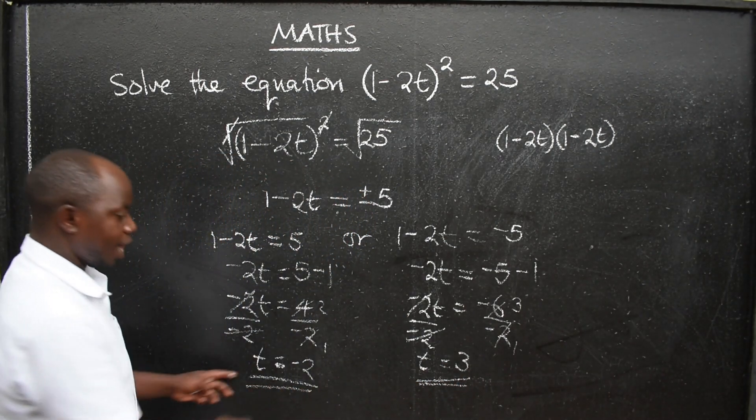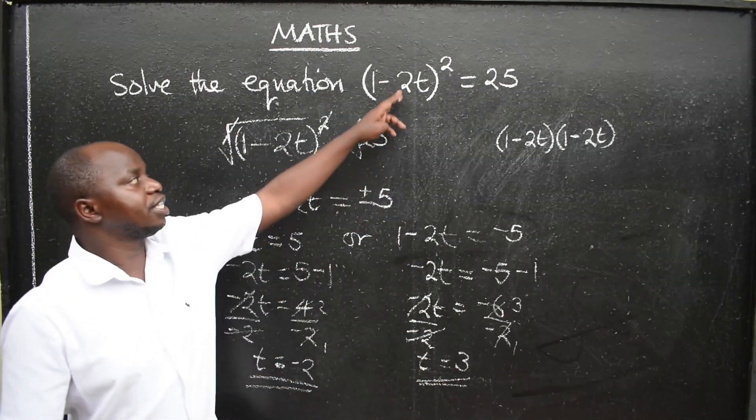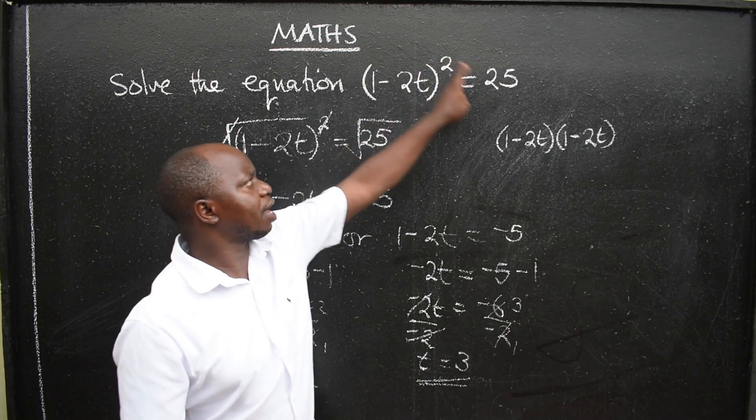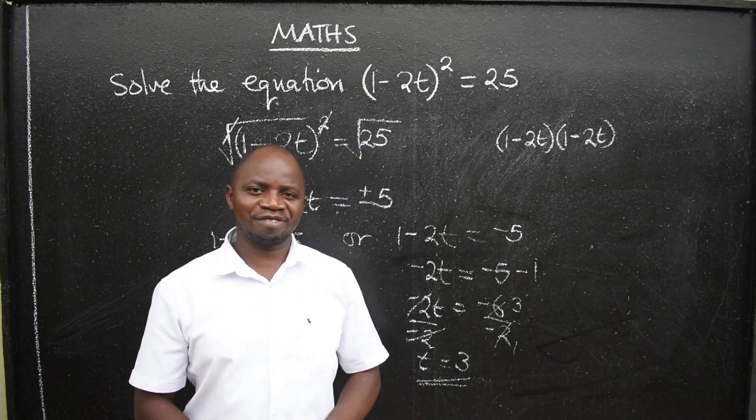So these are the 2 values of t. When you try to substitute them here, work out here, square, you should be able to get 25. Bye-bye.